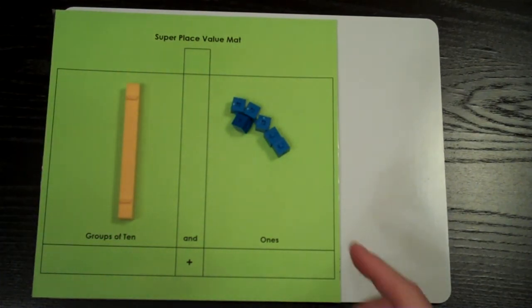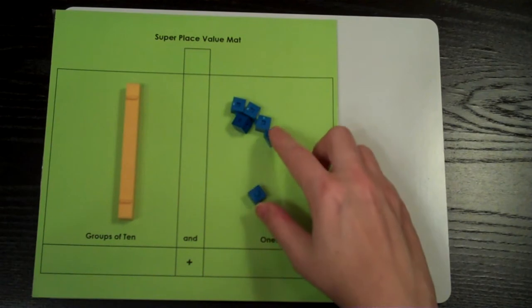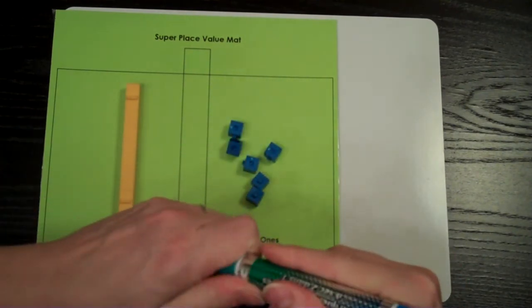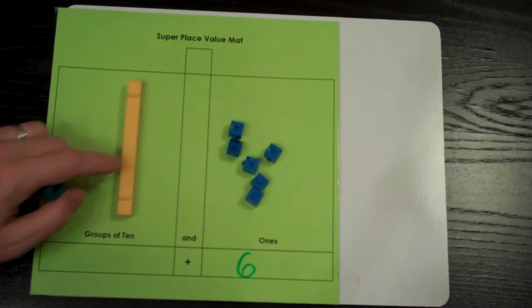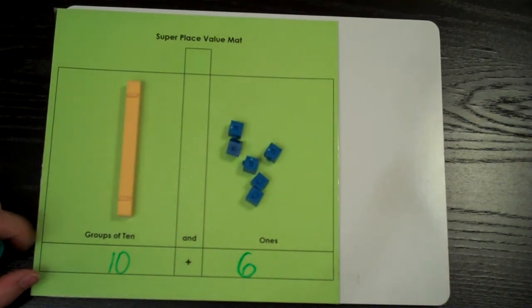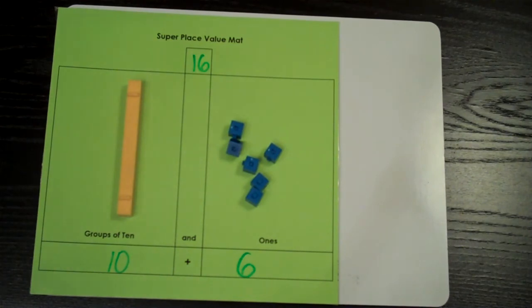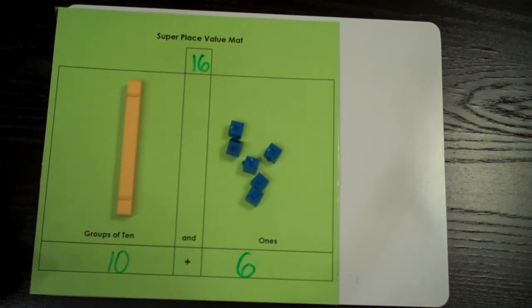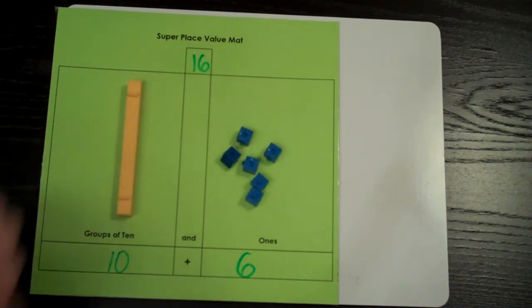Let's check to see if I have 9 or less manipulatives in each place value spot. I count: 1, 2, 3, 4, 5, 6. 6 is less than 9. I only have one group of 10, which is the same as saying I have 10. 10 plus 6 equals 16. So I can show the numeral 16 by writing it as digits, and I can represent the number 16 by using base 10 blocks.